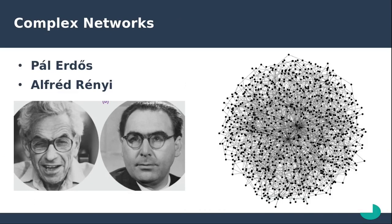In 1960, Paul Erdős and Alfred Rényi introduced complex networks as a big network where connections are established at random. This was the first type of complex networks, which basically associated the word network with bigger graphs. From there on, different real-world problems were represented as big random networks and their properties were observed.